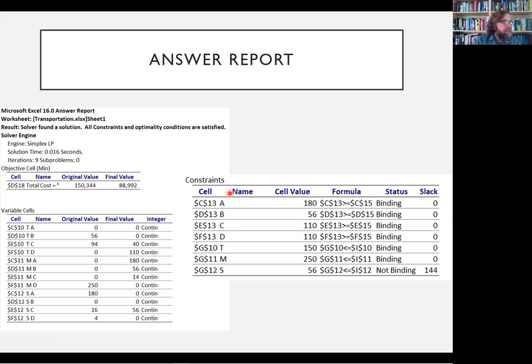Then if we look at our constraints here, we have A, B, C, and D, the amount that have to go to each customer. And those amounts are all binding. We have just barely met those constraints. And then we have T and M and S and two of them are binding, but S is not. S has not shipped out everything it had available.